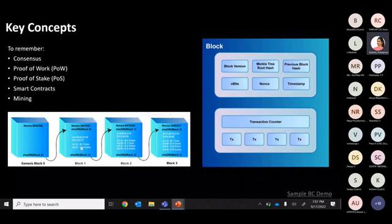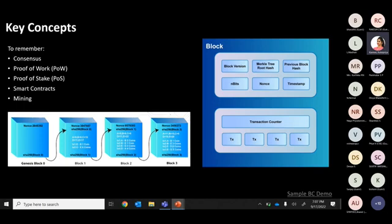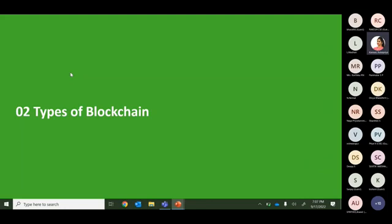Proof of stake reduces the computational energy effort, but you must spend money buying assets. The minor difference is that proof of work consumes a lot of energy while proof of stake is more energy-efficient. Both ultimately require significant cost — one in electricity and computation, the other in purchasing assets.